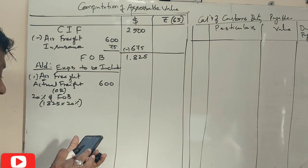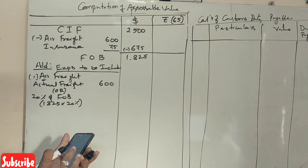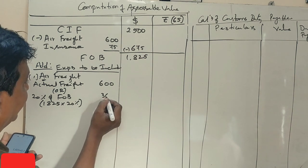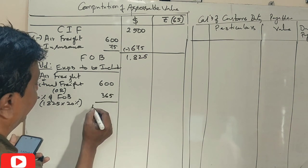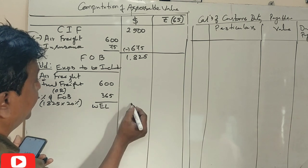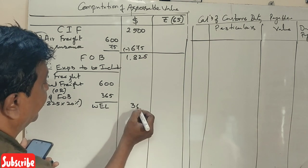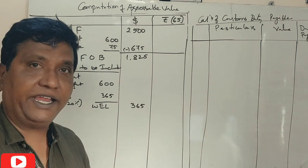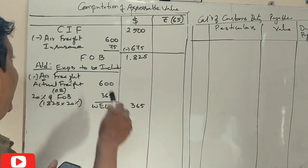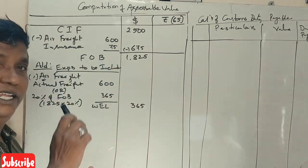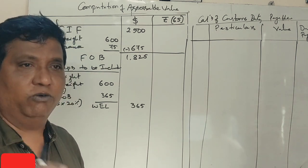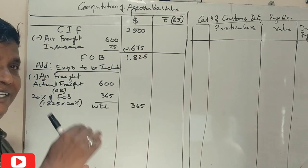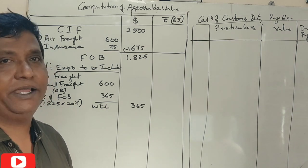$1,825 multiplied by 20% equals $365. So the actual air freight is $600 and 20% of FOB is $365. Whichever is lower should be taken. So we take $365 as the air freight for customs purposes.